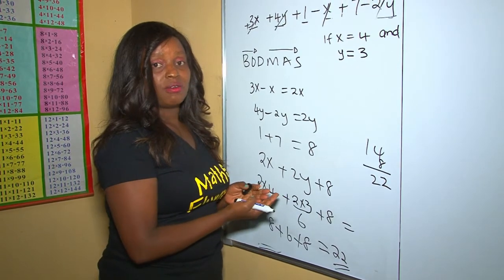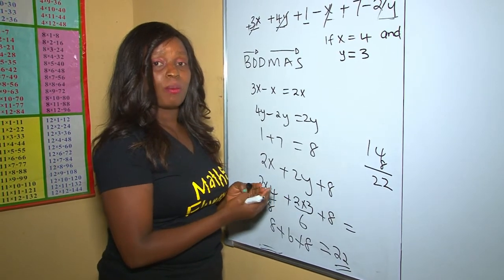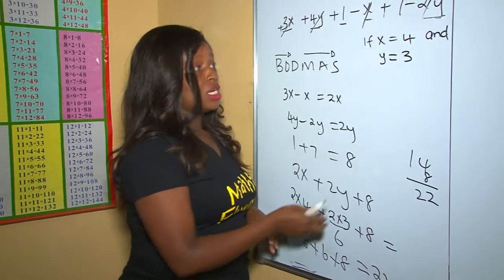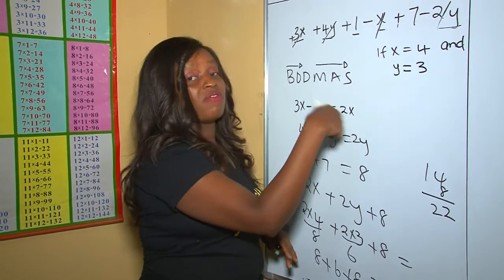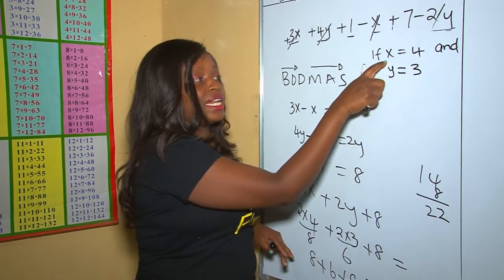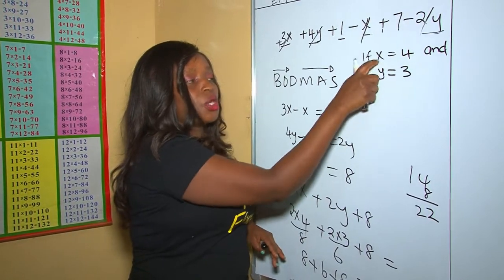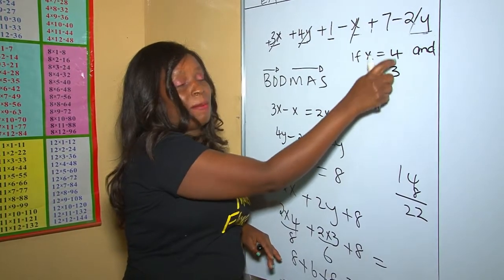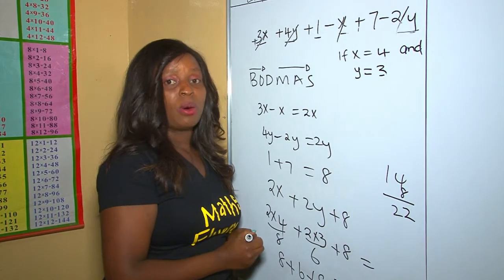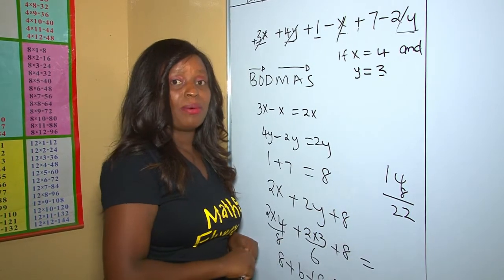This is different from just forming algebraic expressions. In this case, we are evaluating them by replacing the letters using the real numbers that are already given. Let's do our second example.